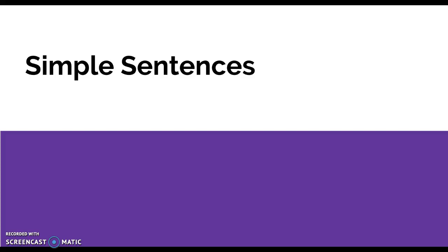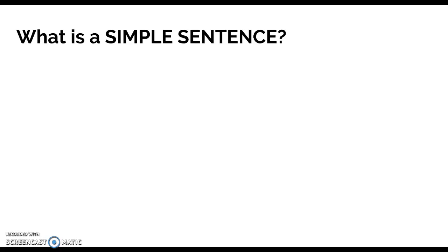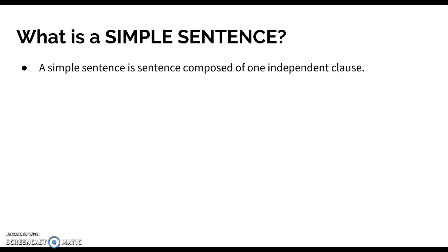In this short video we'll be discussing simple sentences. So what is a simple sentence? A simple sentence is a sentence composed of one independent clause. In other words, it just has a subject and a verb or verbs.